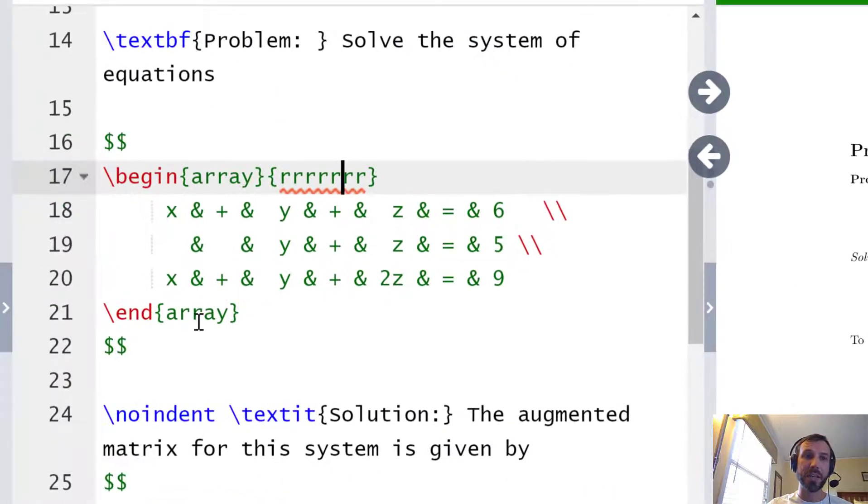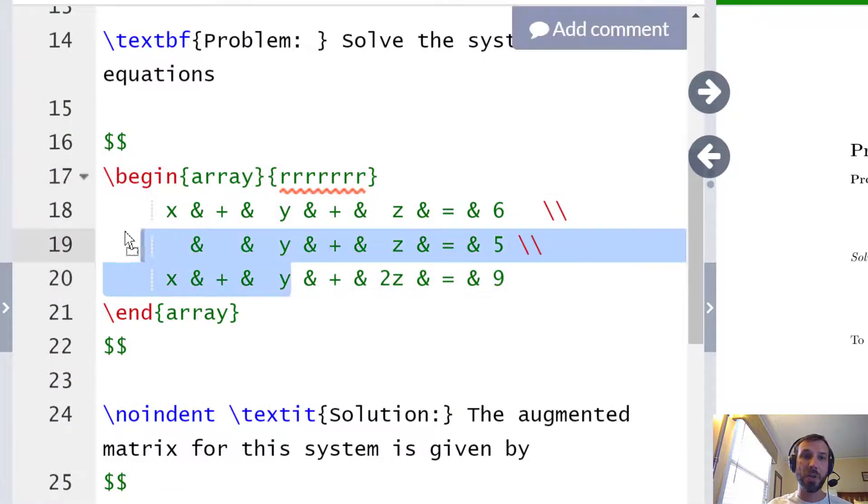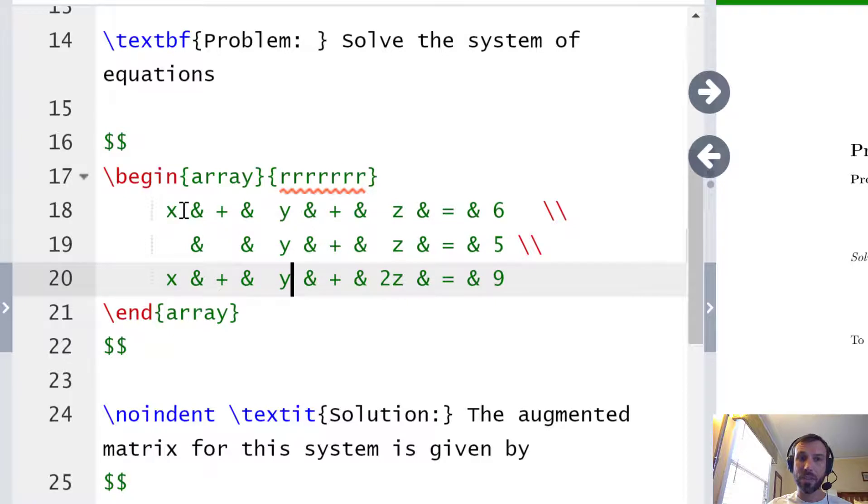Now between the begin array and the end array statements I have the three rows of my output. Notice that in these three rows I have each column separated by an ampersand. I personally find it useful to line up these ampersands so that I am guaranteed to have the same number of them in each row. The one mistake that I see a lot though is putting a different number of ampersands per row and this sort of formatting will help you get around that issue. Each row ends with double backslashes to indicate the start of a new row. So the basic format is ampersand separate elements between columns and double backslashes separate rows.